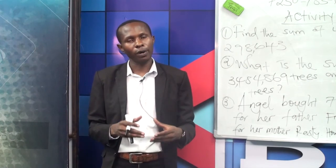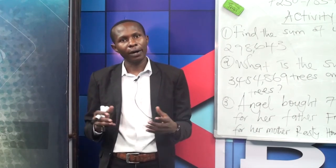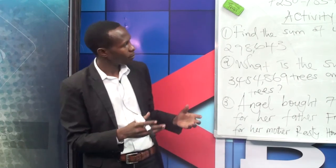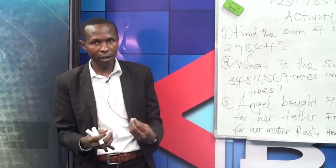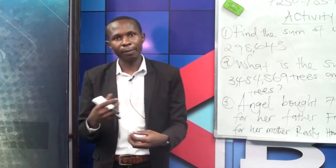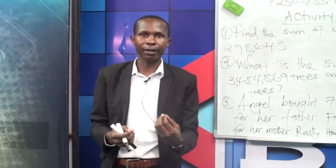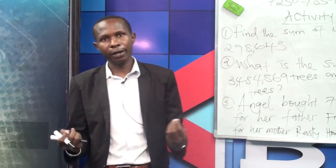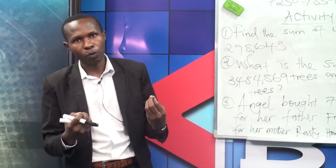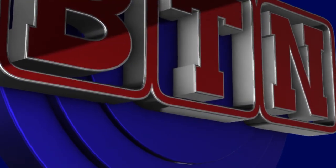Lastly, Angel bought 78,486 kilograms of rice for her father Fred, and 236,736,780 kilograms for her mother Roister. How many kilograms did she buy altogether? We really appreciate those still watching BTN TV. I recognize the staff and my support for allowing me to deliver these lessons to the young generation. Thank you.